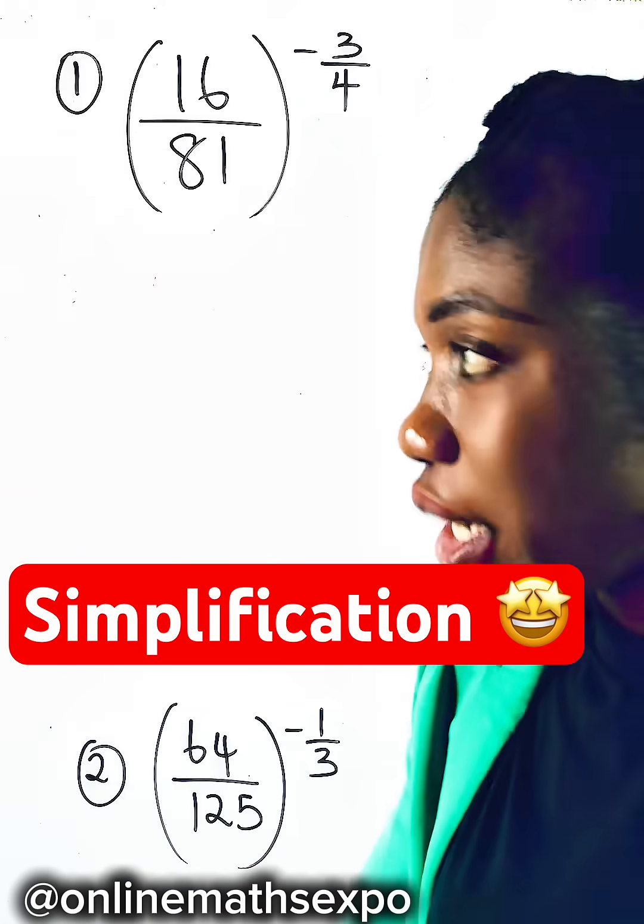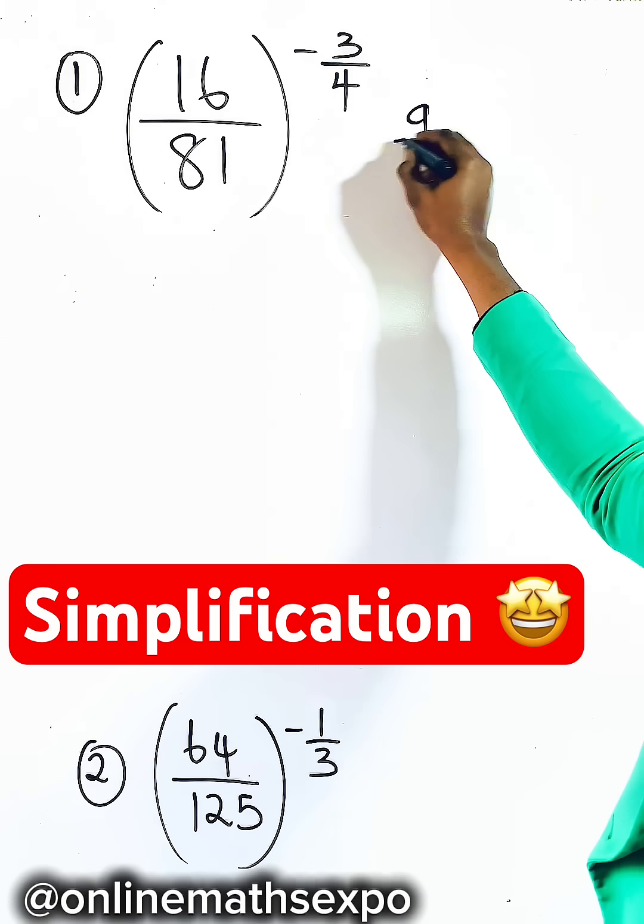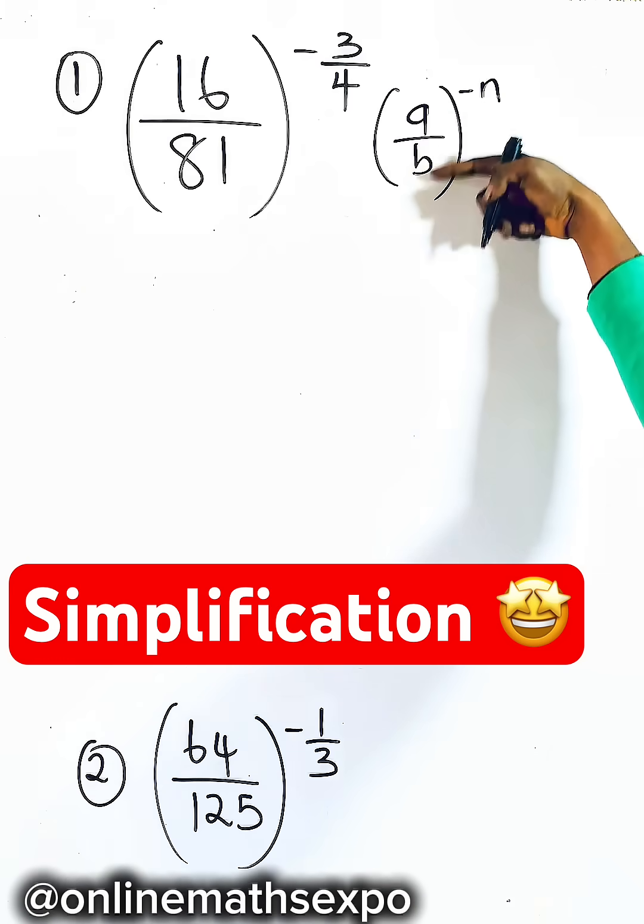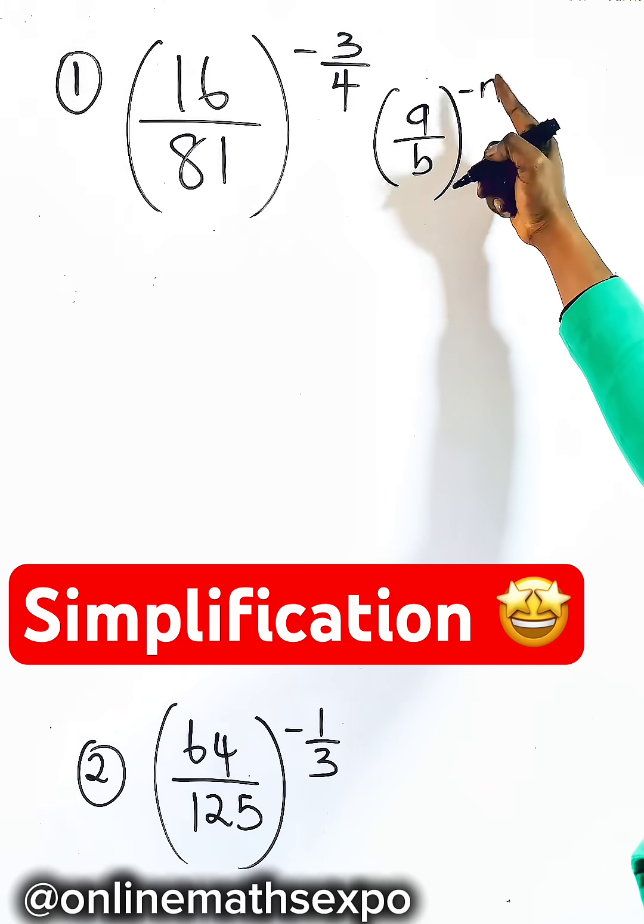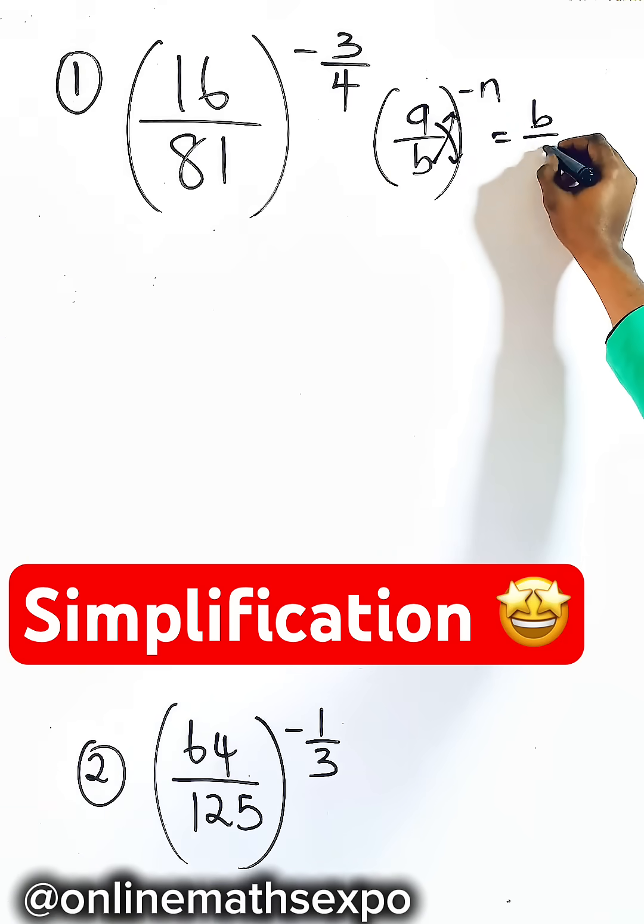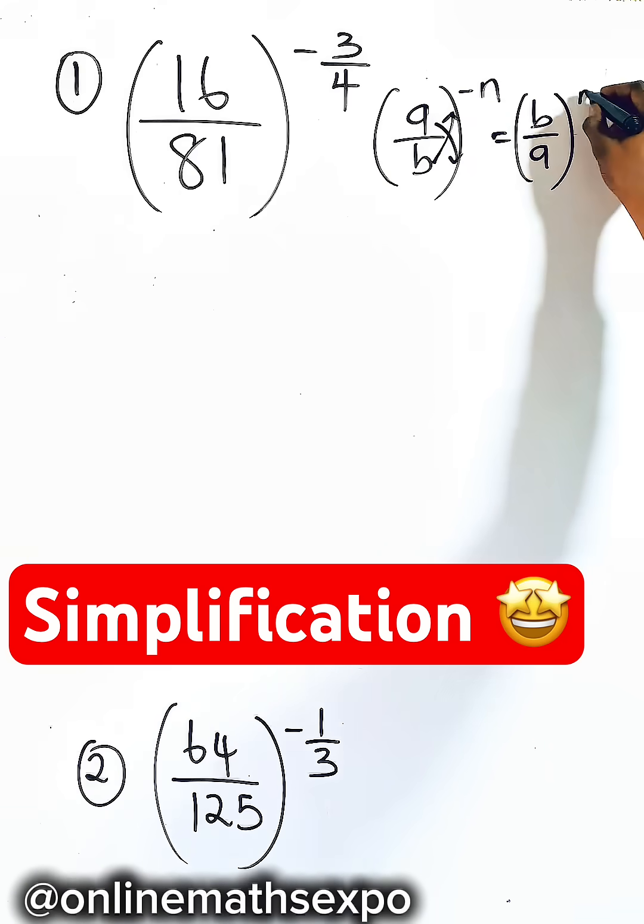To simplify this, remember this rule: for every a divided by b raised to power of negative n, the inside is a fraction. To remove the negative power, just reverse the fraction so it becomes b over a raised to power n.